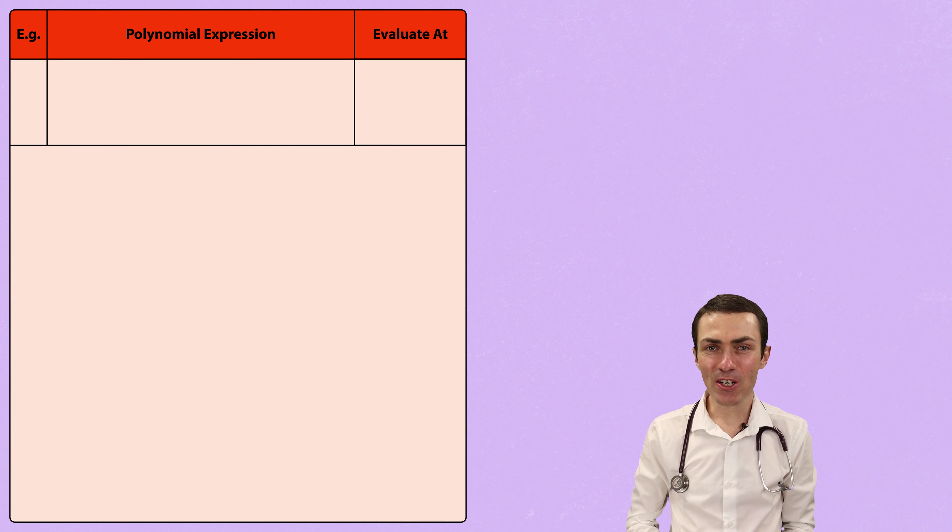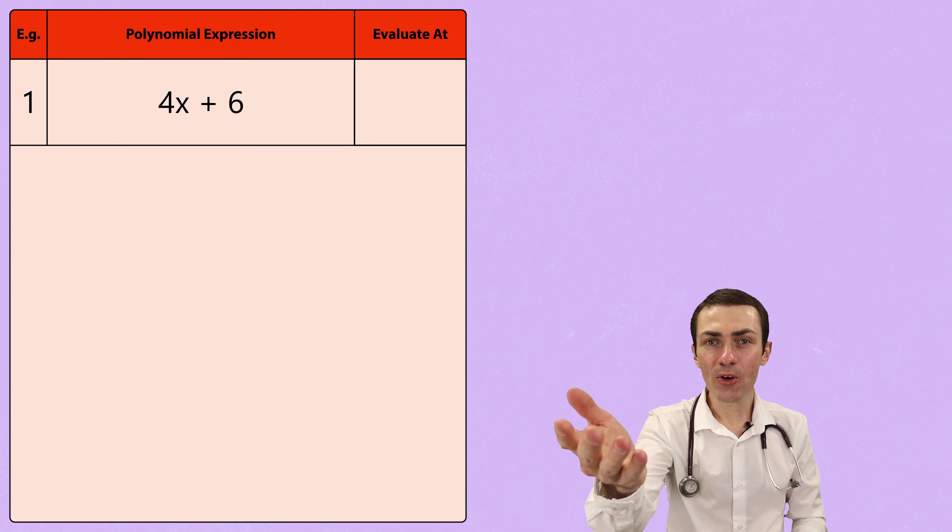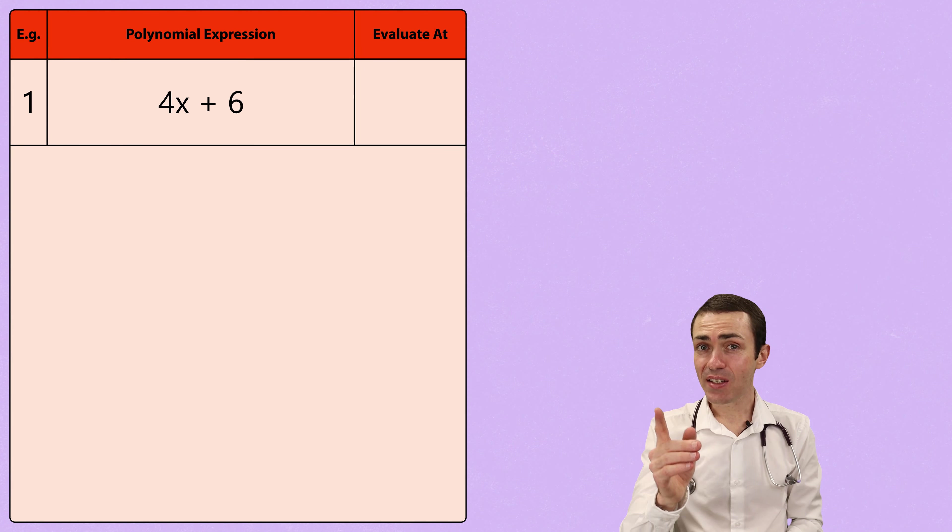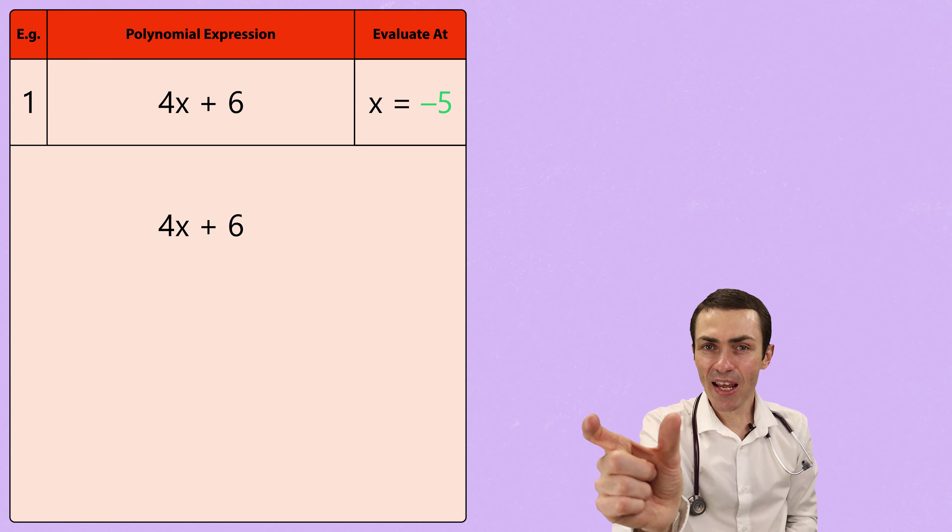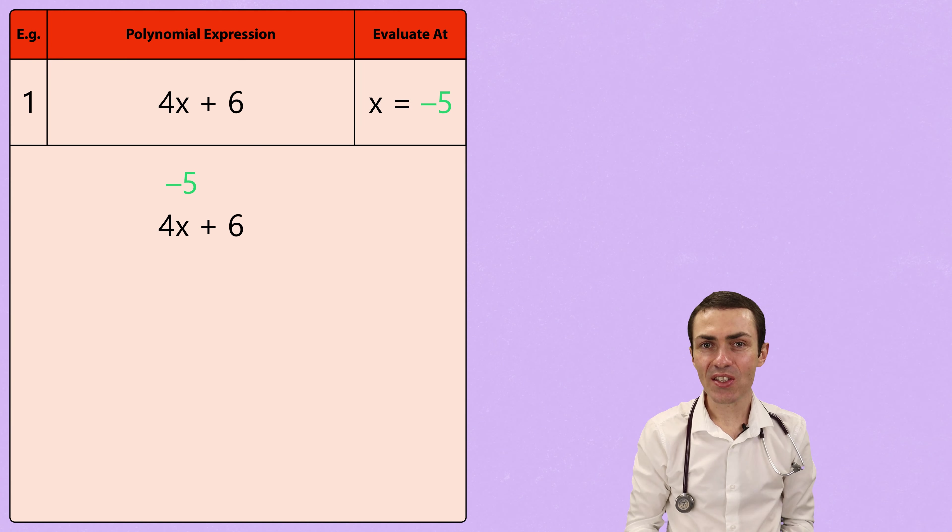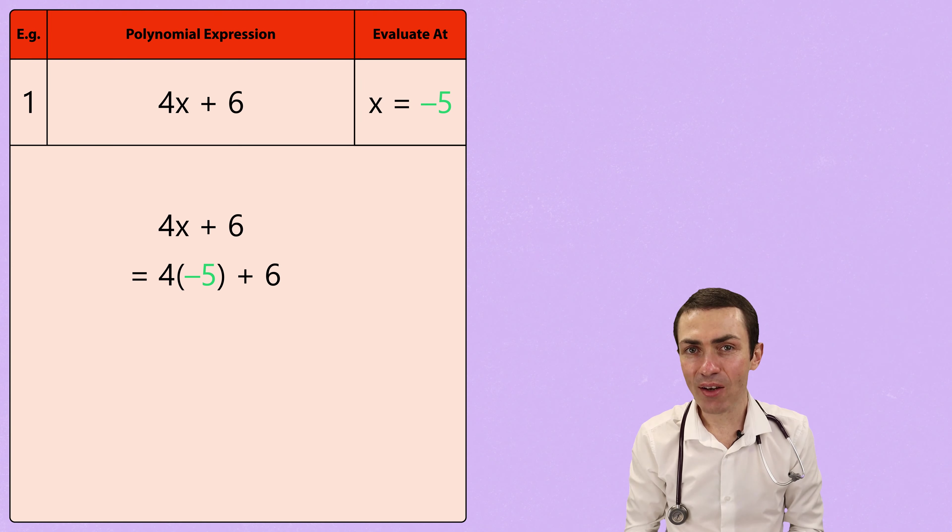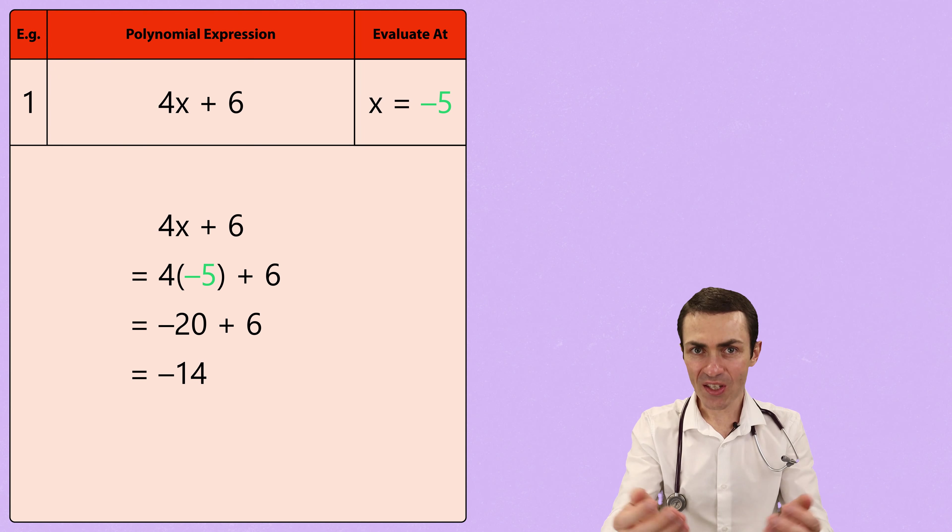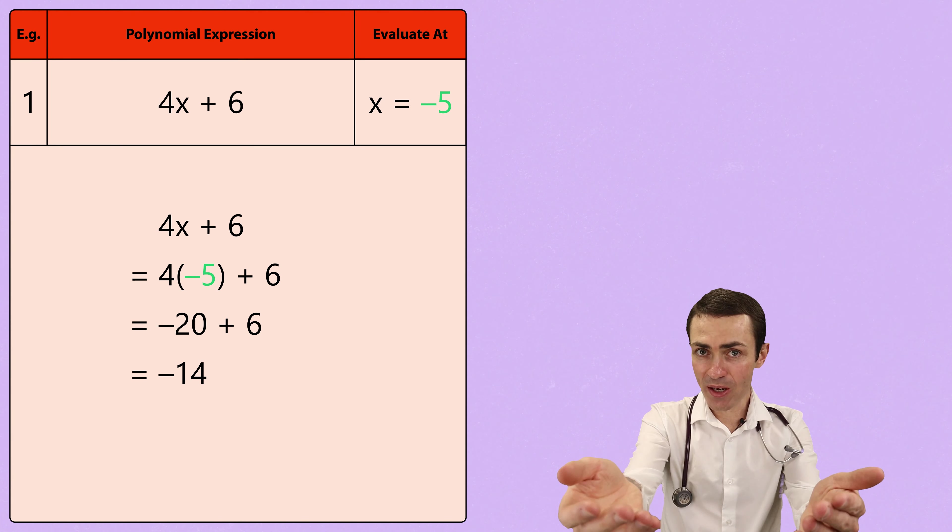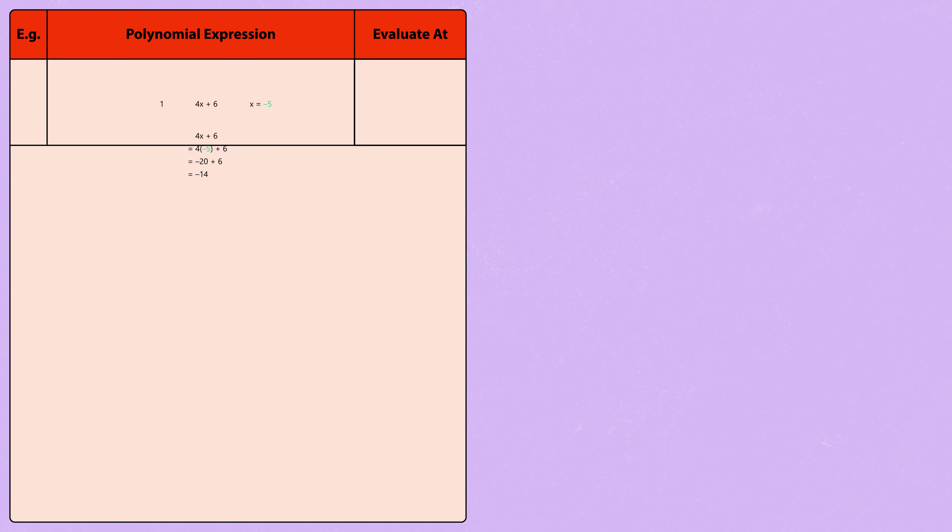Today we are going to evaluate five different polynomial expressions, starting with 4x plus 6 at x equals negative 5. In order to evaluate this polynomial expression, we substitute negative 5 in place of x and then simplify. So 4 multiplied by negative 5 gives us negative 20. And when we add 6 onto negative 20, we get negative 14. And that is our evaluation of this polynomial.